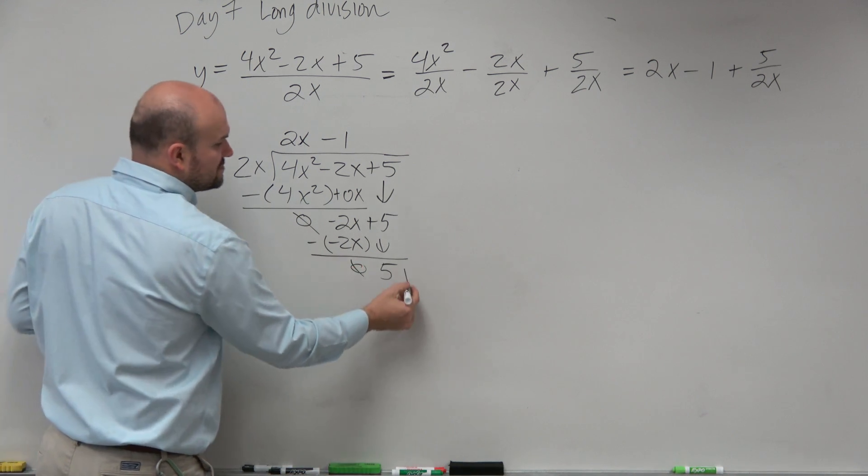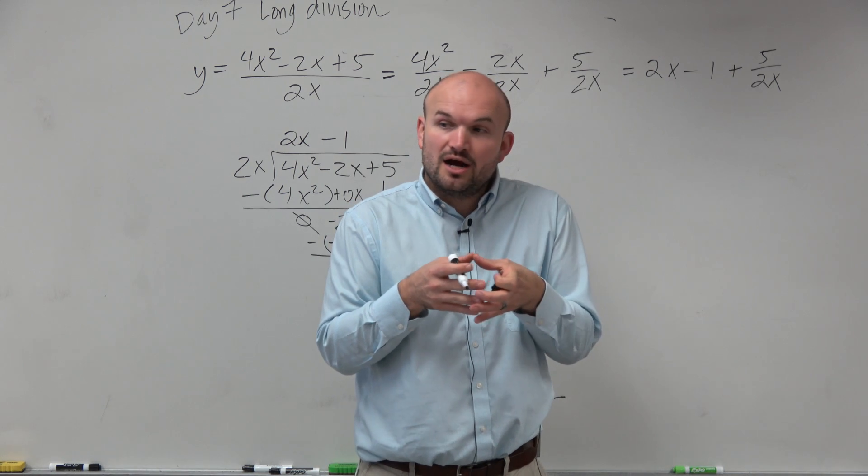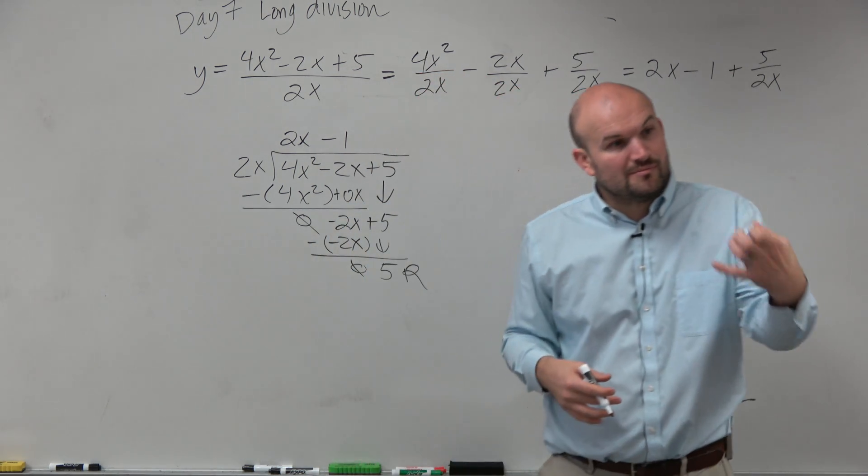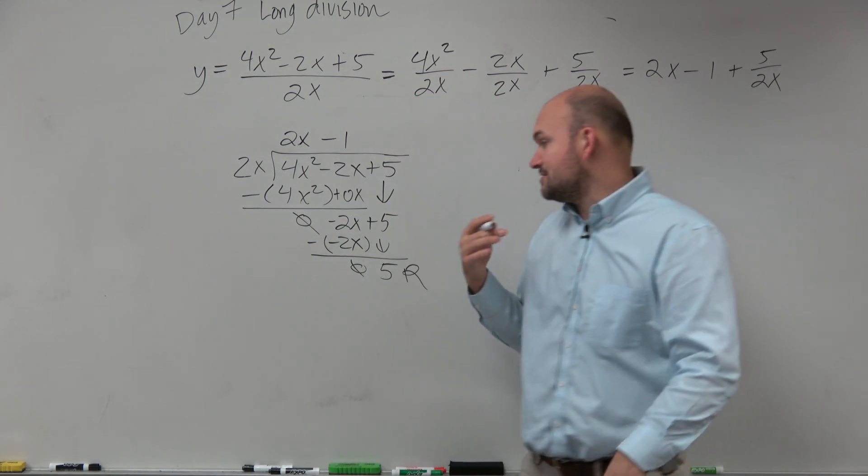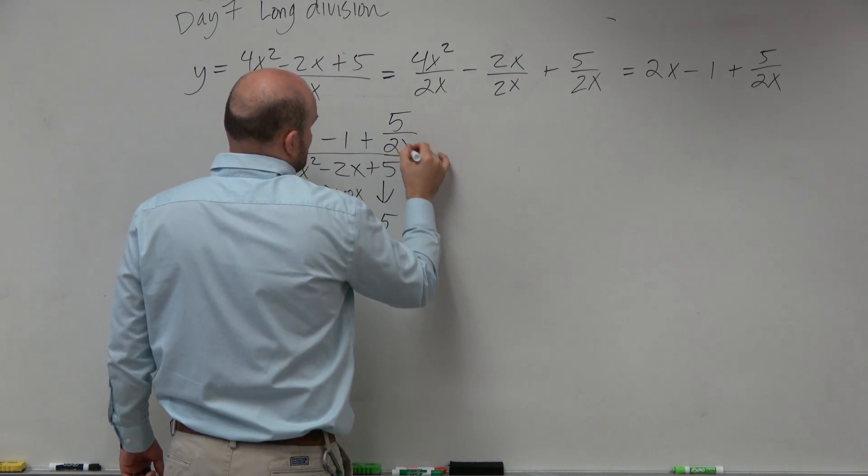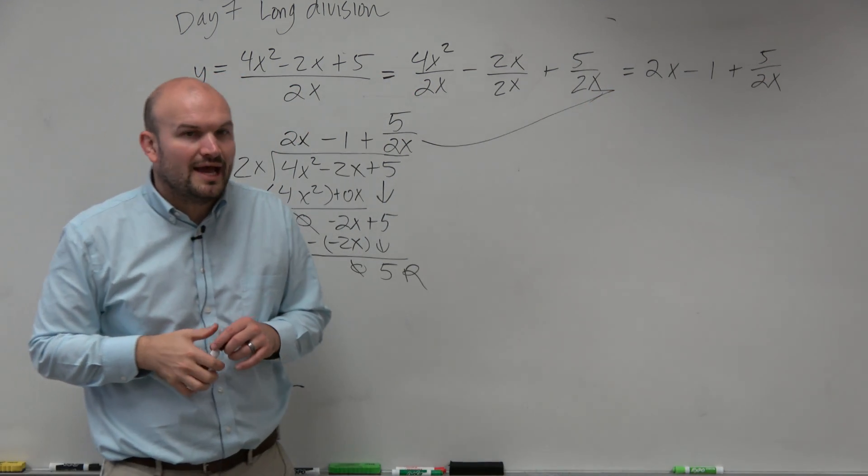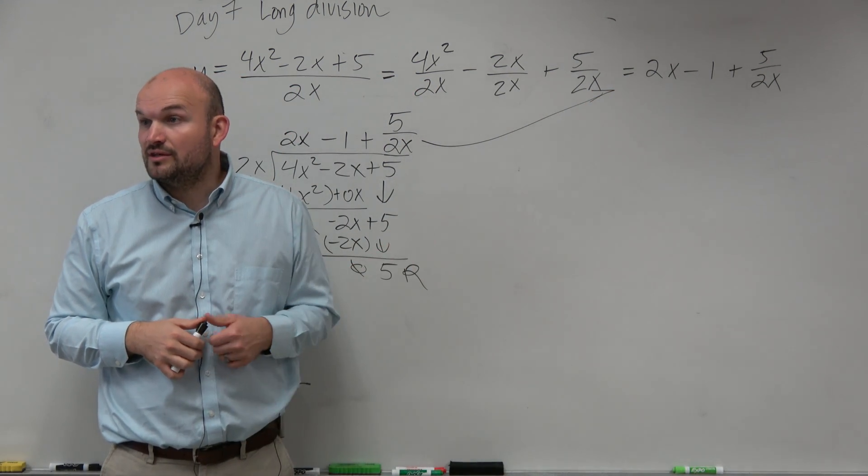2x does not divide into 5, so that's what we call our remainder. And when we write our division summary, we take the remainder and write it over the divisor. So it's a plus 5 over 2x. And what do you know, ladies and gentlemen? That's the exact same thing as our answer that we did the other way.